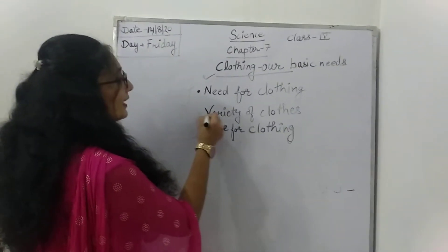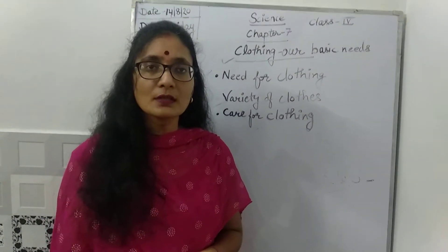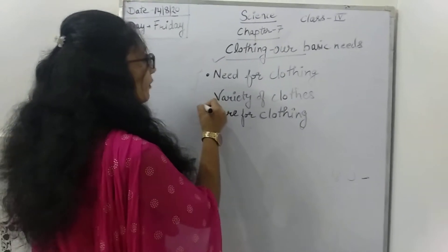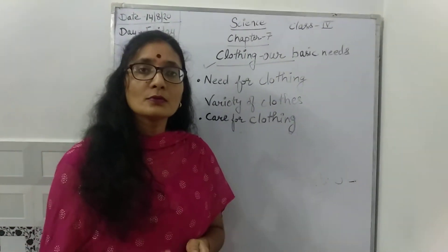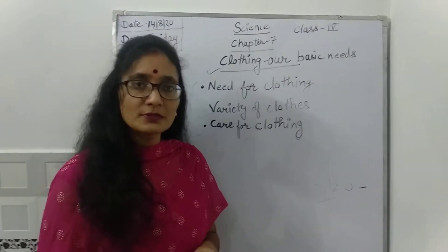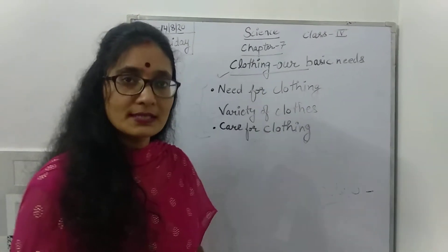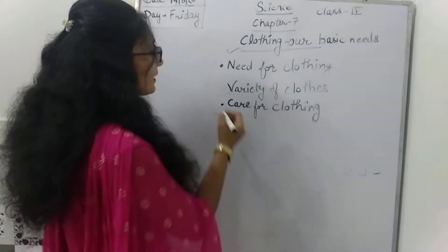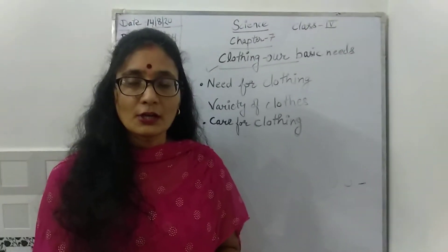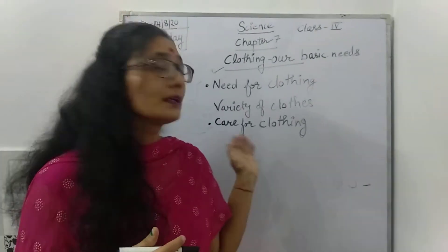Next is variety of clothes. There are different varieties of clothes in different seasons. The clothes we obtain come from two sources: one is natural and the second is synthetic. Natural fibers and synthetic fibers are obtained for our clothes. Next is care for clothing — how we can care for our clothing and why, because clothes need proper caring and storing.